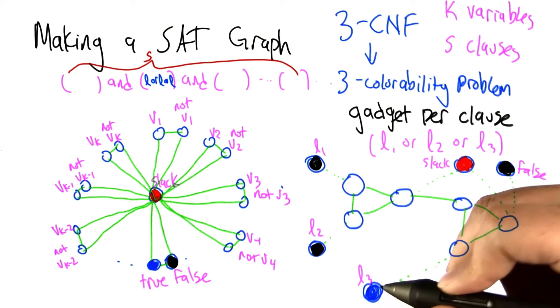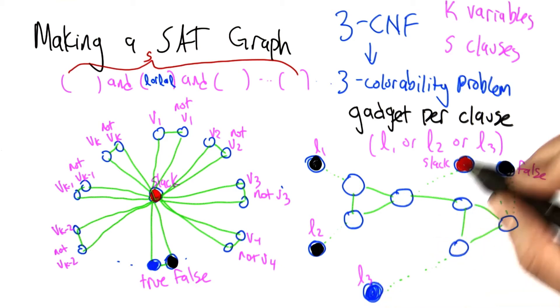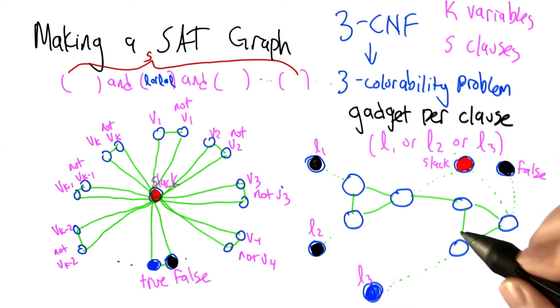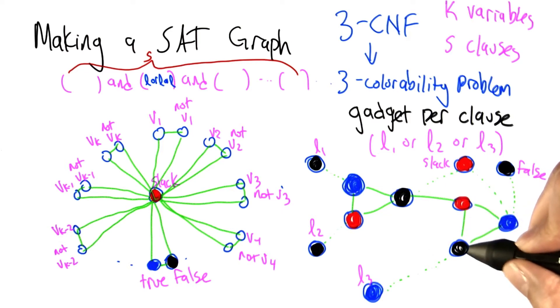What if this literal is blue? Well, that means that one of the literals in the clause is true. So the whole clause should be true, so this better be colorable. By the same argument before, this is red and black, so this one has to be blue as well. So it looks like we're okay. We're able to assign colors to all these nodes so that none of the coloring constraints are violated.